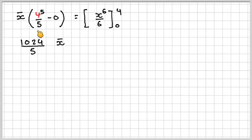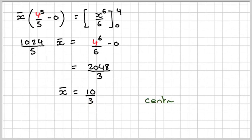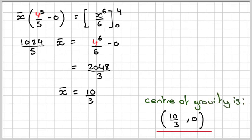Okay, so working this out, we get 1024 over 5 times x̄ equals 4 to the 6 over 6, take away 0, which is 2048 over 3. Use the fraction button on your calculator, and that will give x̄ as 10 over 3. Therefore the center of gravity is going to be (10 over 3, 0). This is 0 because of symmetry.